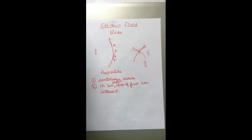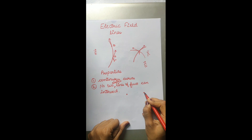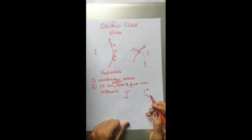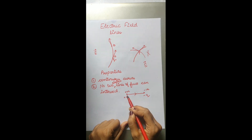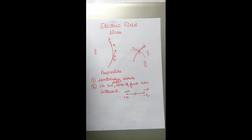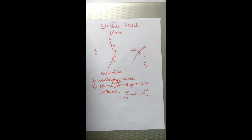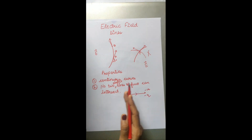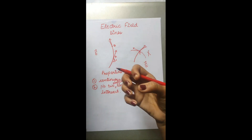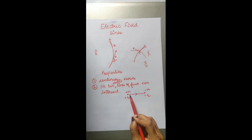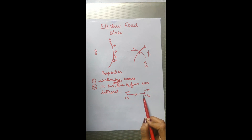The third property: electric field lines start from positive charges and end at negative charges. Suppose I have a +q charge and a −q charge. The electric field lines would start from the positive charge and end at the negative charge. This is because the positive test charge is repelled away from +q and attracted towards −q. So the path followed by the test charge is away from +q and towards −q, and hence electric field lines are directed away from positive and towards negative.